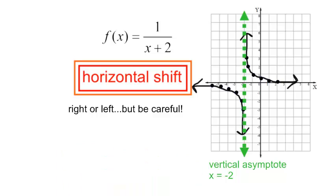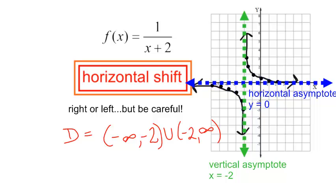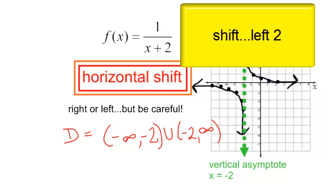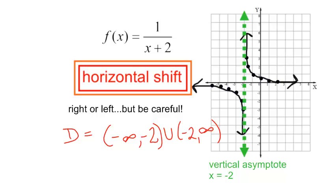When looking for the domain, the denominator cannot equal 0. So x plus 2 cannot equal 0, which means x cannot equal negative 2. My domain would be negative infinity, take a little break at negative 2, and then start back right after negative 2 going to positive infinity. My range: the horizontal asymptote is still y equals 0 — I did not shift it up or down, this was just a shift to the left two places. So the range is still negative infinity up to 0, stop, take a break, and then 0 to infinity.